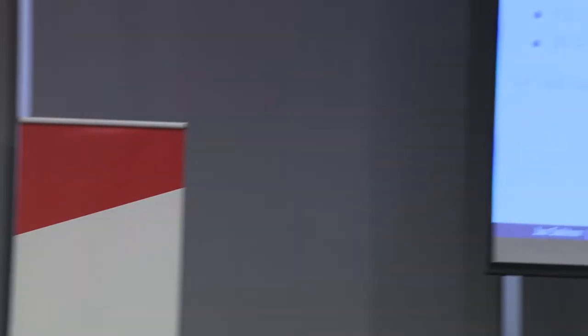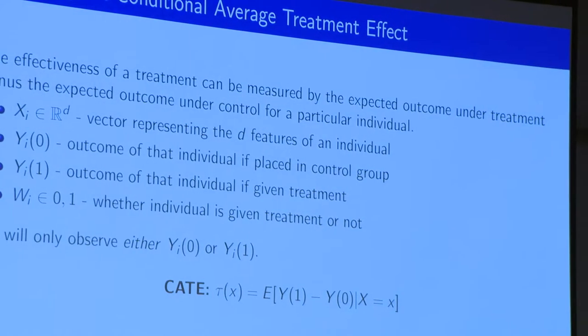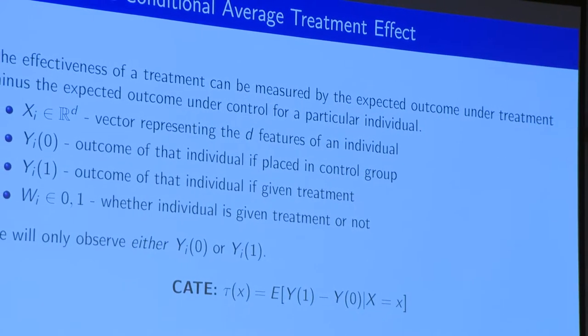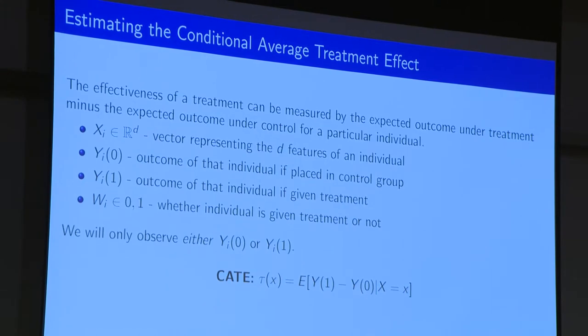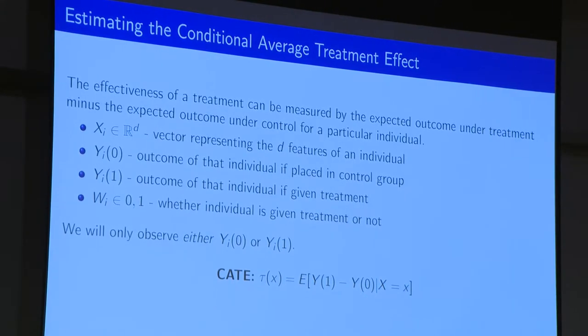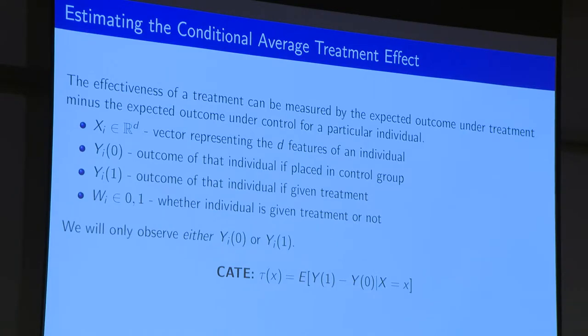The motivating data example in the paper is estimating the conditional average treatment effect, quite popular to estimate around here — the treatment effect conditional on some covariates. For this paper, we assume those covariates are fixed over experiments. We have a whole bunch of experiments and our covariates keep appearing, but what the meaning of the covariates does change across experiments.